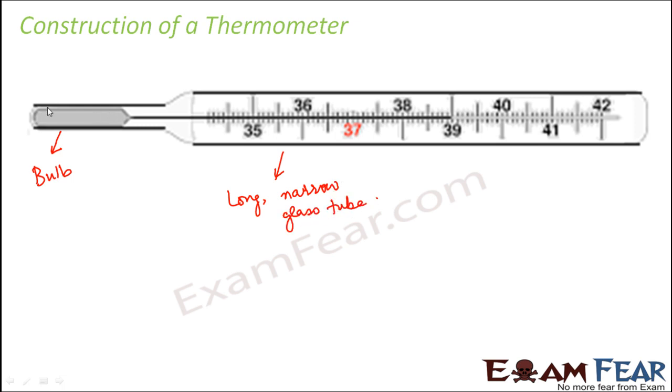Inside this bulb, you have a liquid which is present there. And what is this liquid? This liquid is mercury. So mercury is the only non-metal which is liquid at room temperature. This mercury has got some special properties because of which it is used in the thermometer. And besides this, we have a small shining thread of mercury which can be seen along the length of the tube. This is the length of the tube.